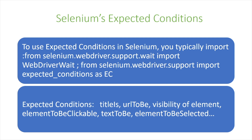Some expected conditions that you can wait for include: title is — the title of the web page; URL to be — what URL; visibility of element — whether the element is visible or not; whether the element is clickable or not; text to be — which is the text on the web page; and element to be selected — which includes what elements are selected.